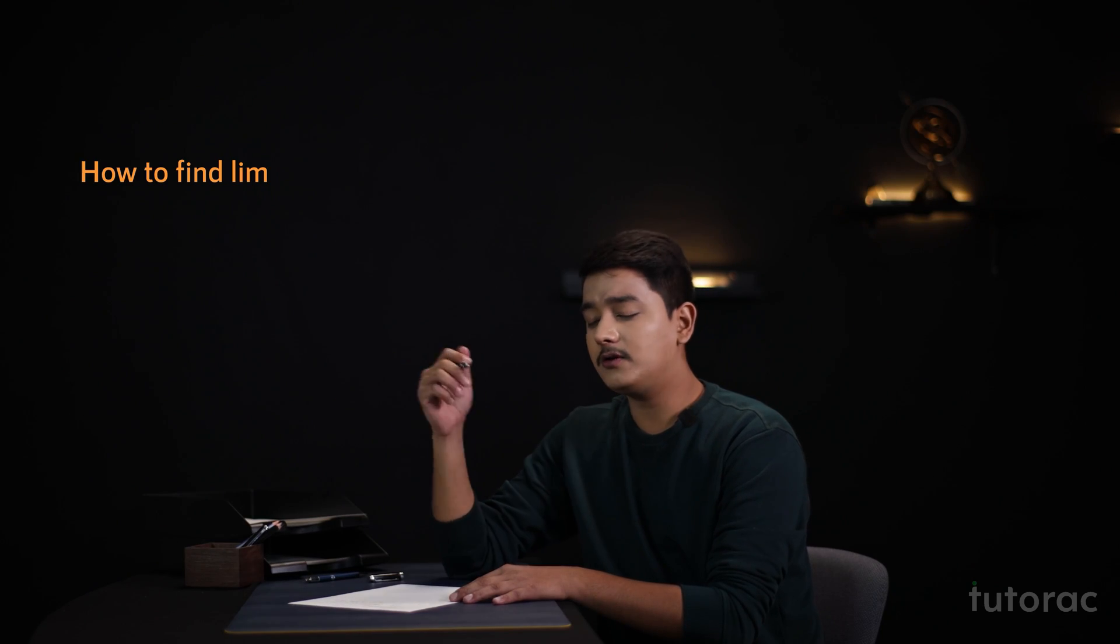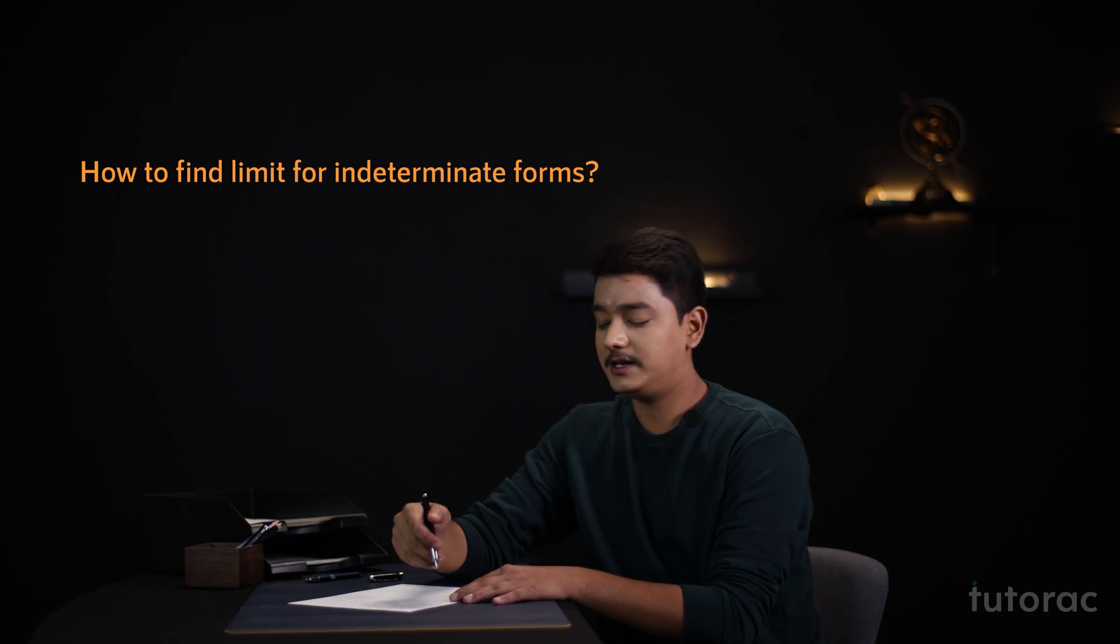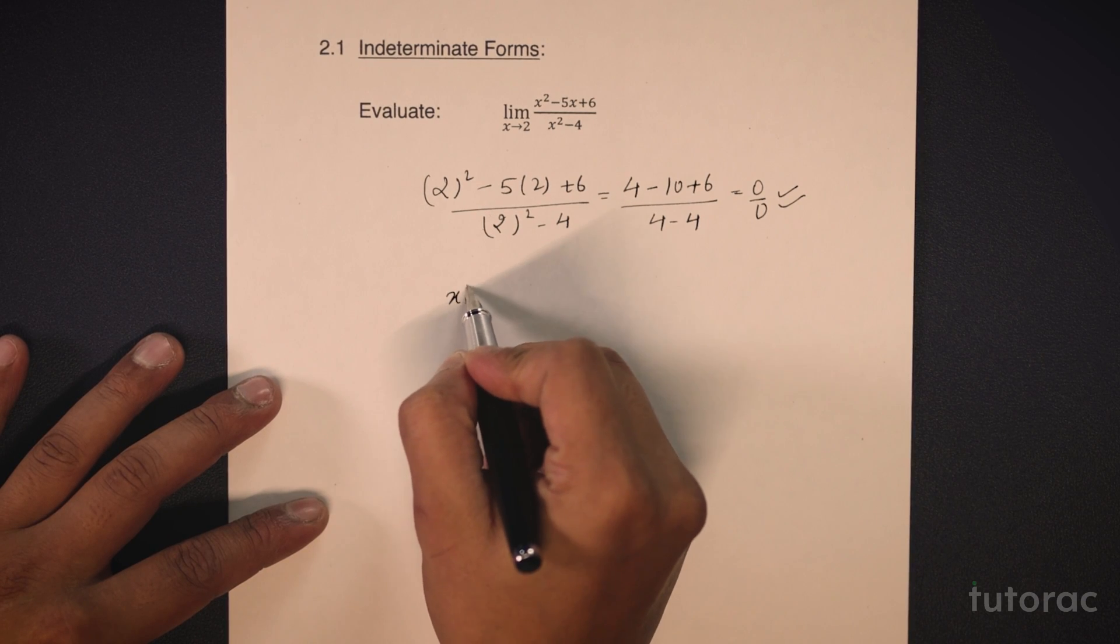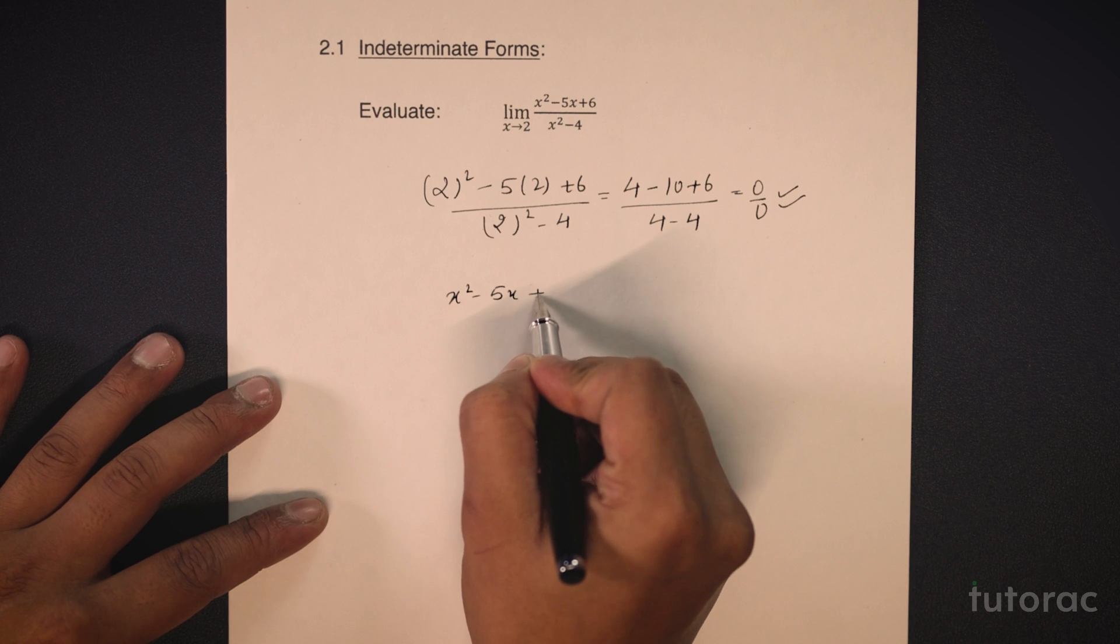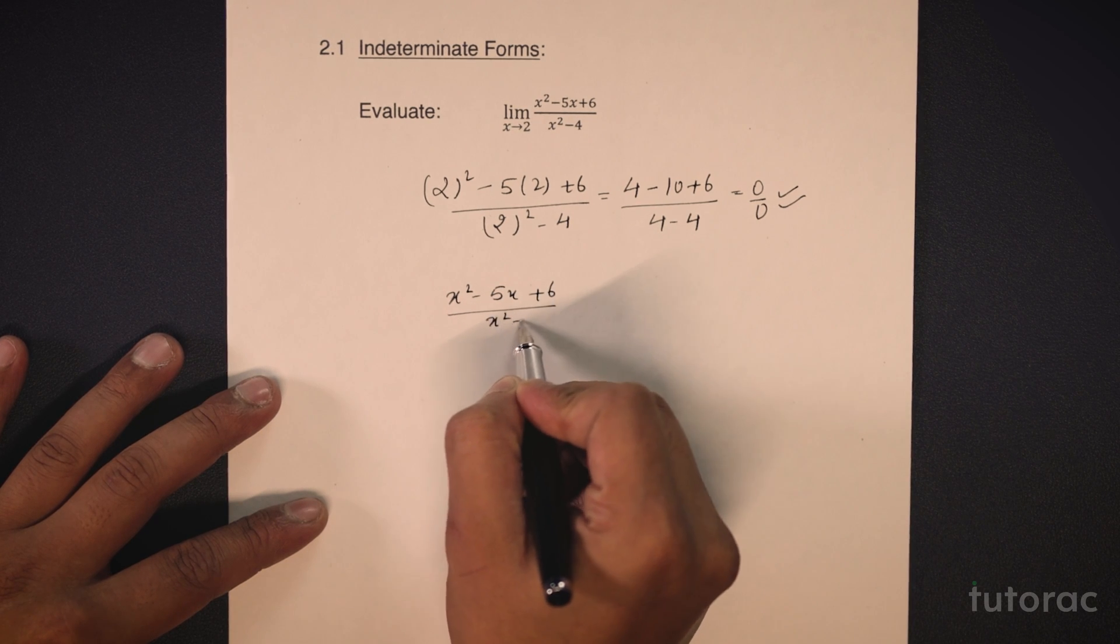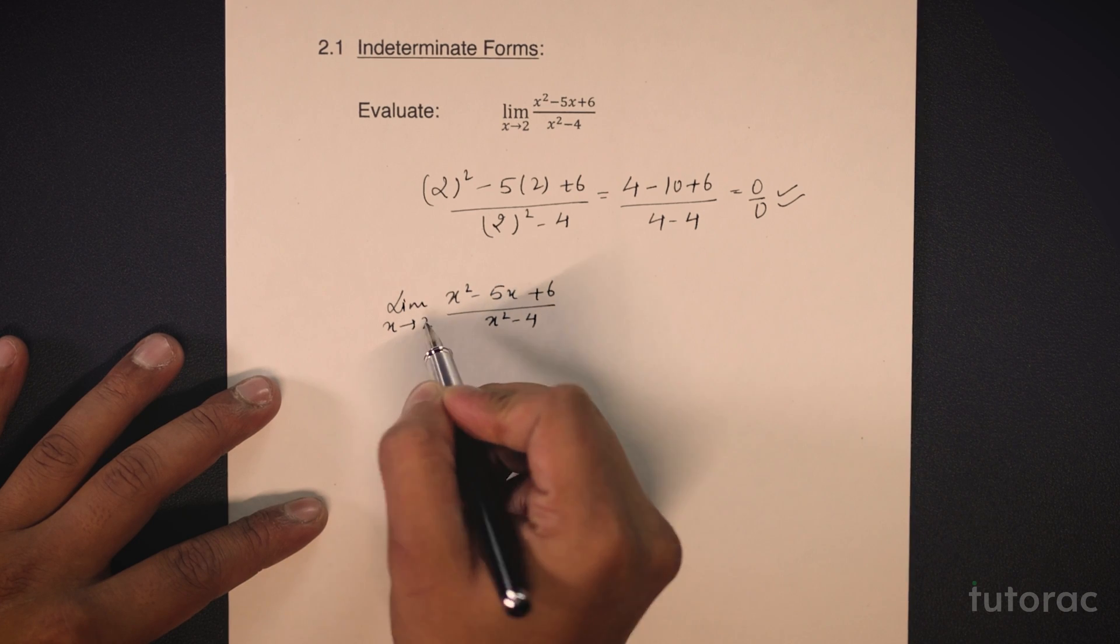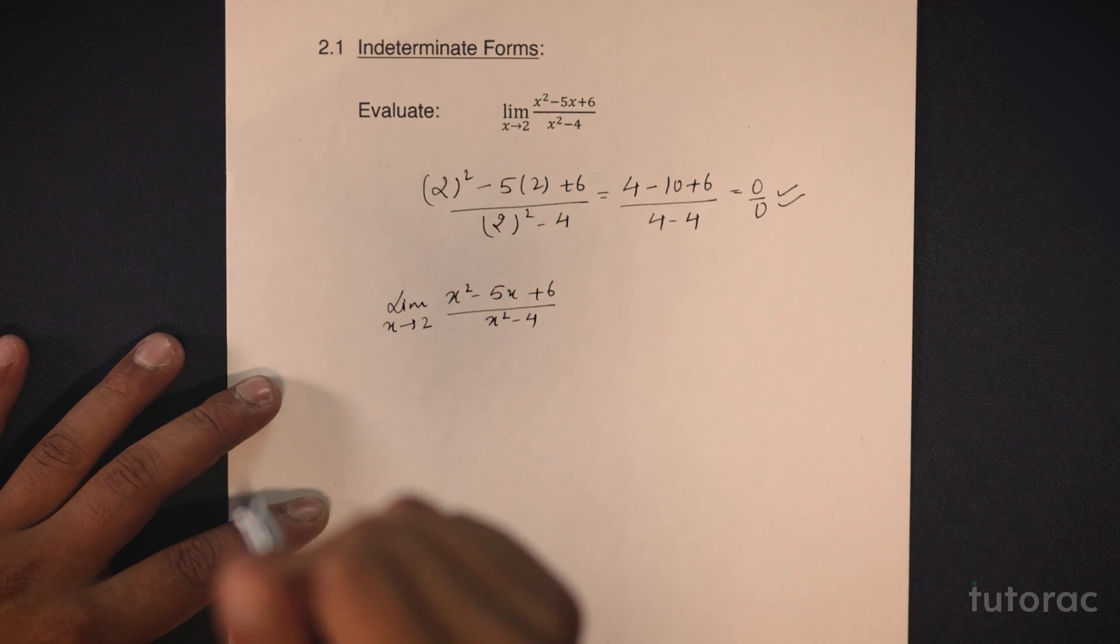How can I solve this limit? Let us see how. We have x square minus 5x plus 6 upon x square minus 4 and we have to find the value of this function at x tending to 2.